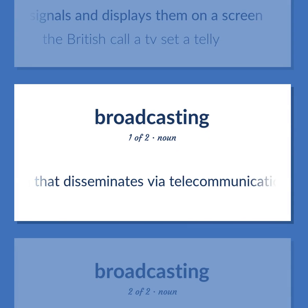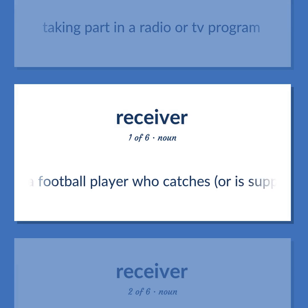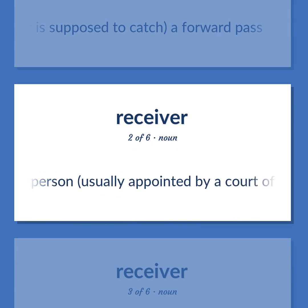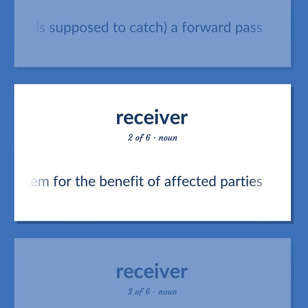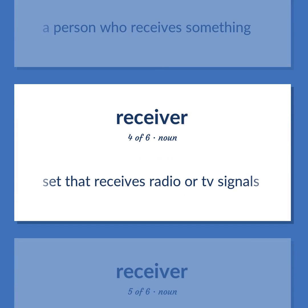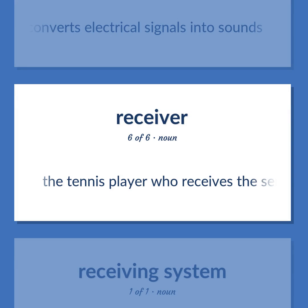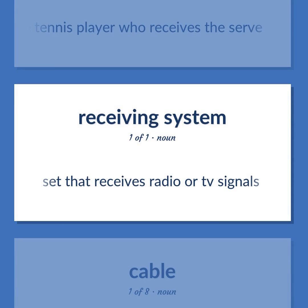Receiver: a medium that disseminates via telecommunications. Taking part in a radio or TV program. A football player who catches, or is supposed to catch, a forward pass. Law: a person, usually appointed by a court of law, who liquidates assets or preserves them for the benefit of affected parties. A person who receives something. A set that receives radio or TV signals. An earphone that converts electrical signals into sounds. The tennis player who receives the serve.